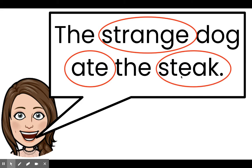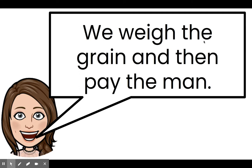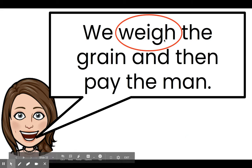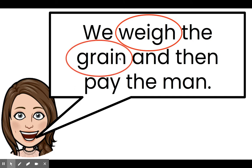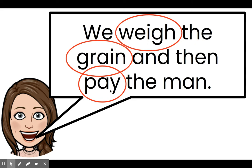The long A pattern E-A: steak. Let's read another sentence: We weigh the grain and then pay the man. The word weigh uses the E-I pattern. Grain has the A-I pattern for long A. Pay uses A-Y. Good work identifying long A patterns and reading words with long A patterns! You can head back to Seesaw for some more long A activities. Bye!